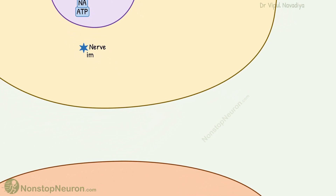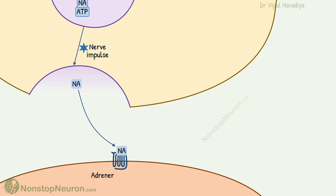When stimulated by a nerve impulse, the content of the vesicle is released into the synaptic cleft by exocytosis. The noradrenaline then stimulates the adrenergic receptor on the postsynaptic membrane, initiating the response by the next cell. This is how noradrenaline stimulates whatever cell it is supplying.